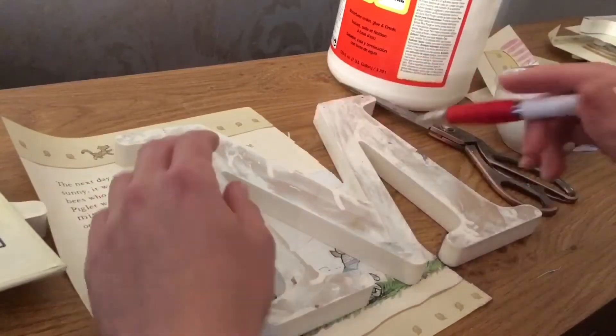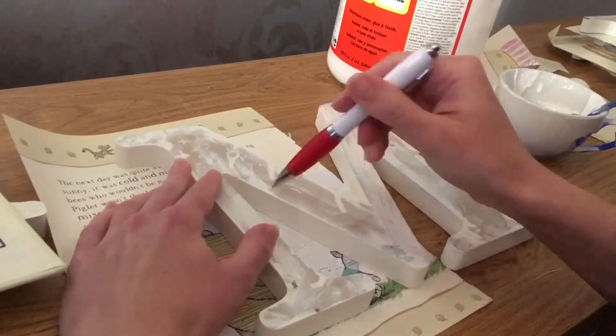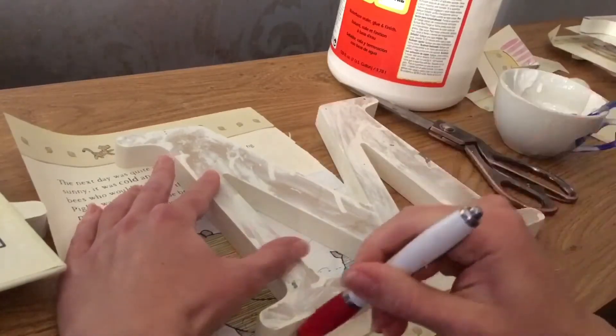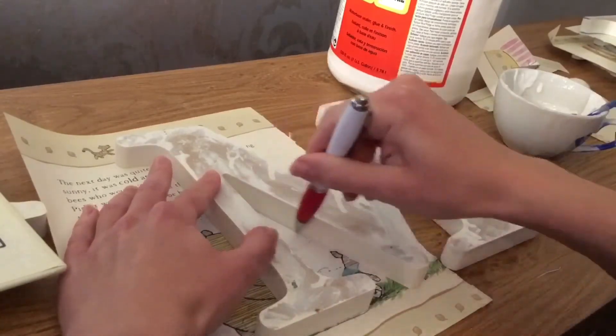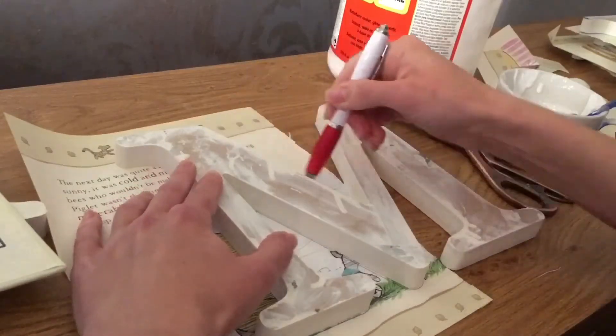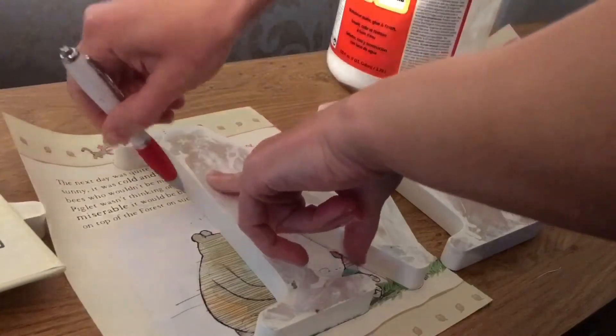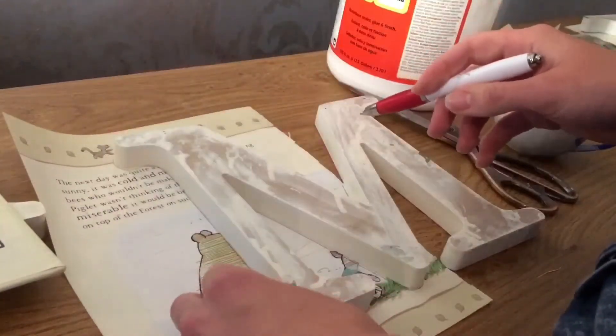When you spray paint the letters spray the back, not the front because the picture goes on the front. Then just draw around the letters again. You want to do this for each and every one.